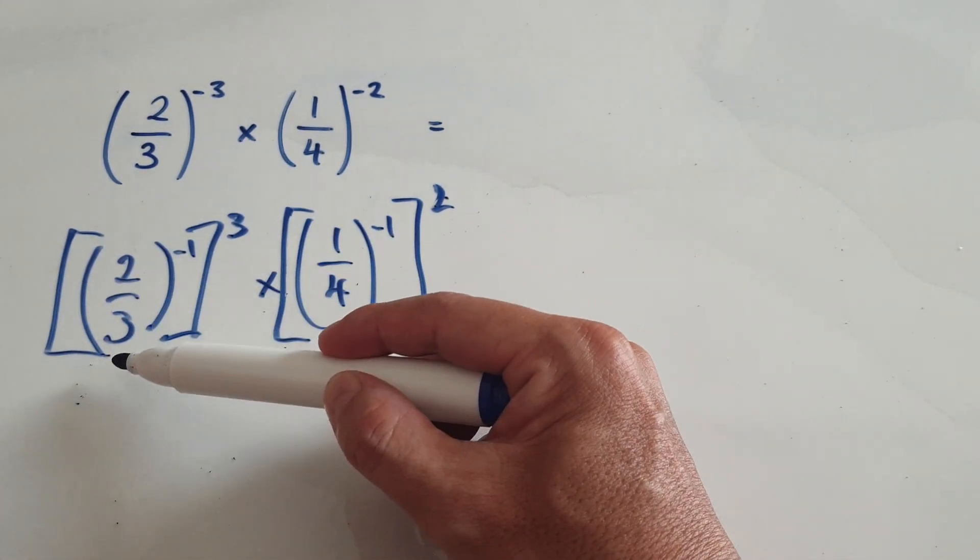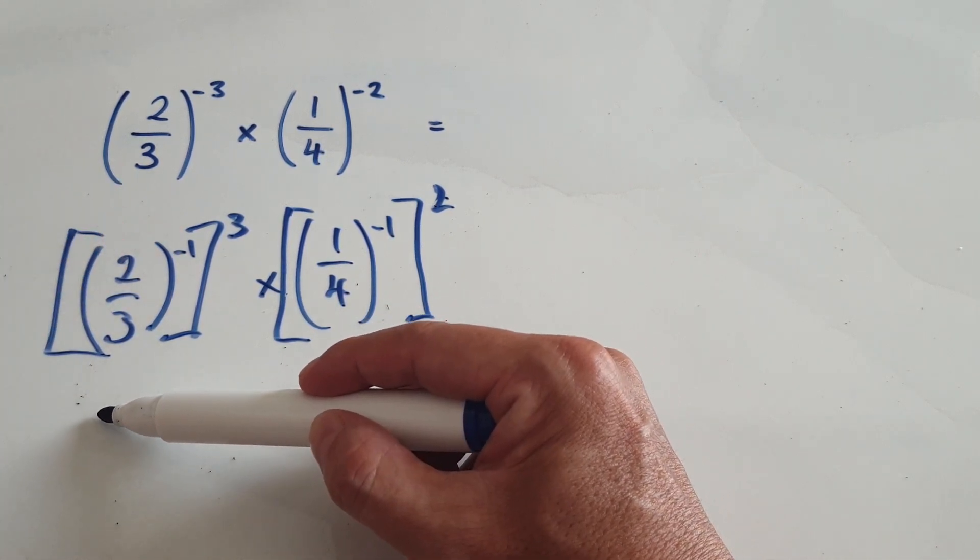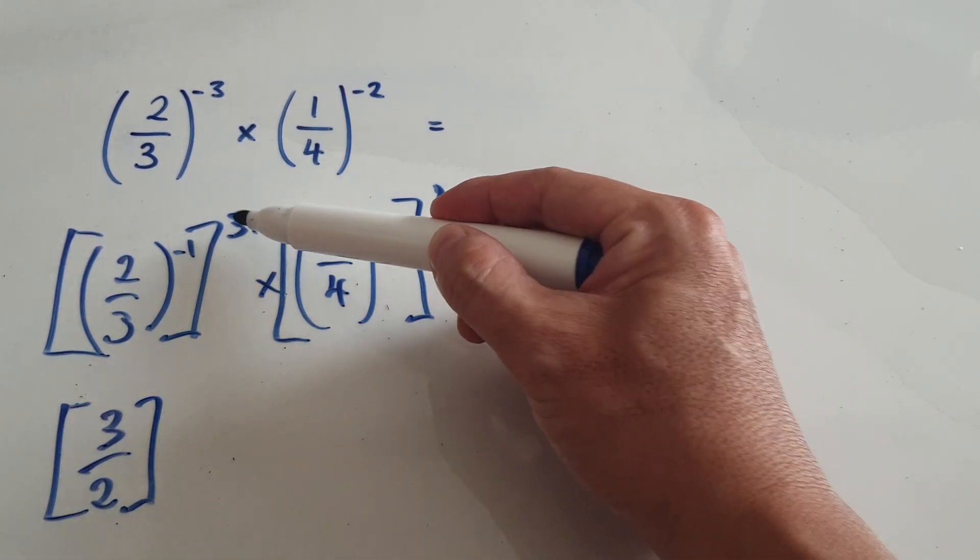And I justified it in one of the earlier videos. So when you see this, turn it upside down. The negative 1 index will actually turn it upside down. So it will look like this, 3 over 2 to the power of 3.